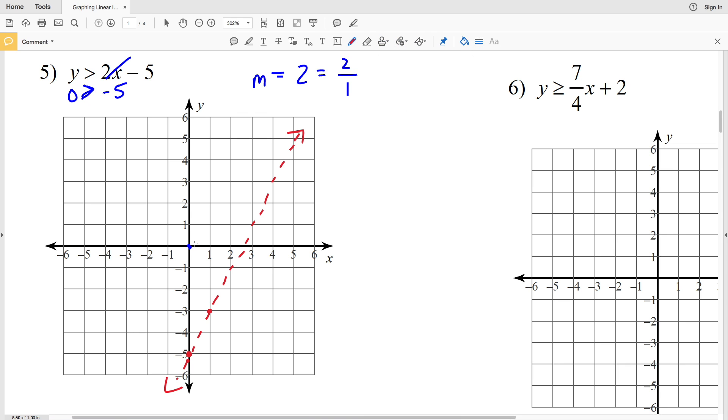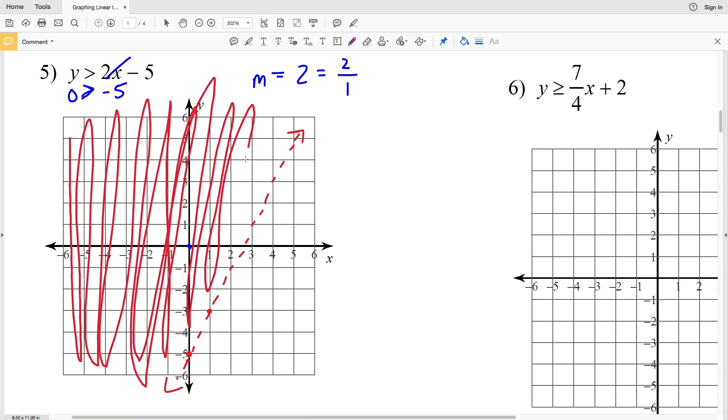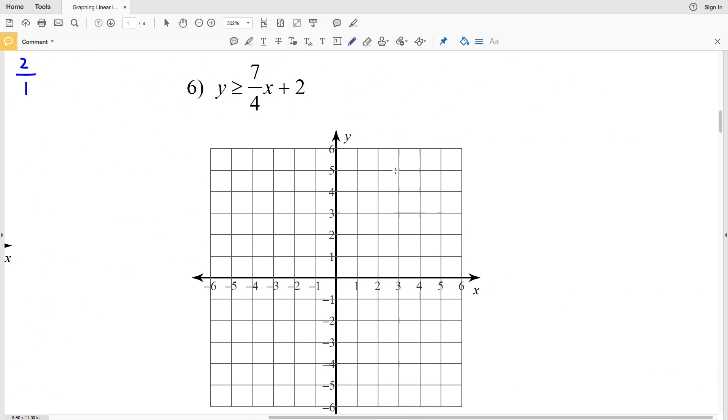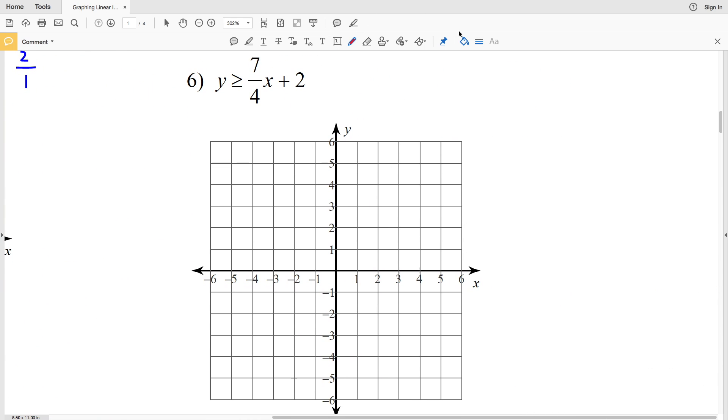0 is indeed greater than negative 5, so we're going to shade in including that test point. So this is everything to the left of that inequality line. Let's continue on to number 6. And number 6, our m or our slope is 7/4.